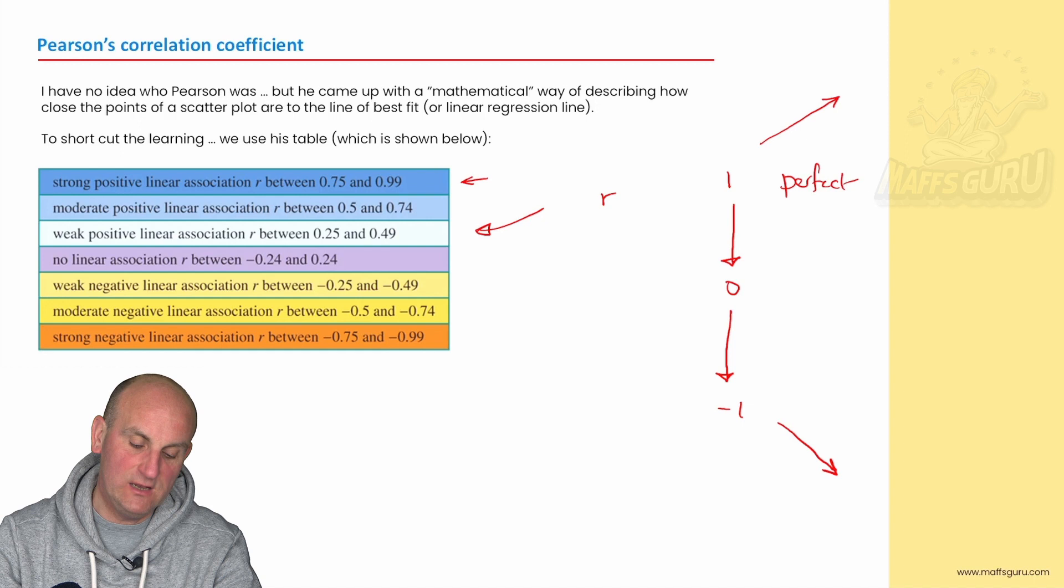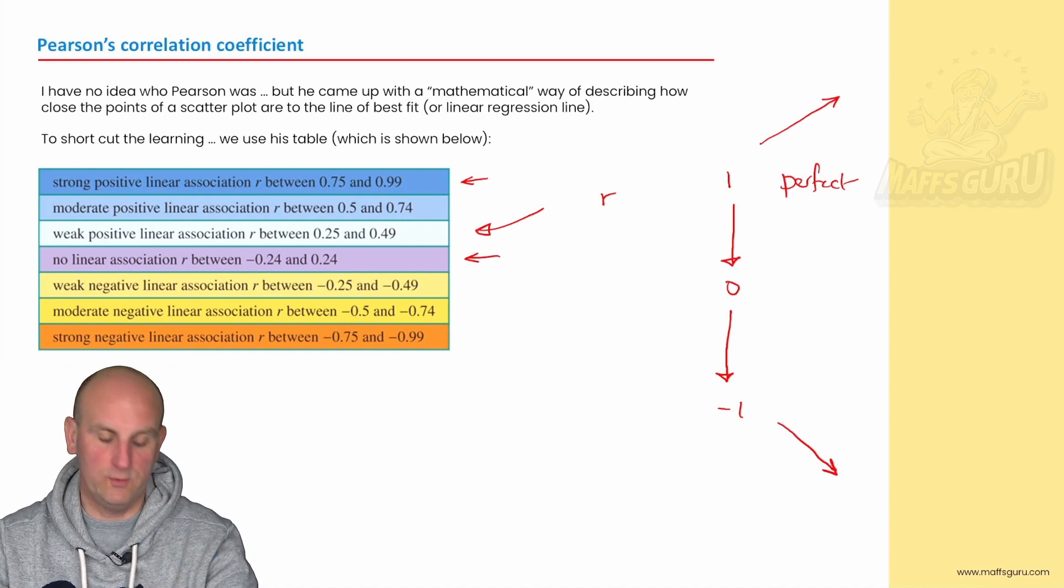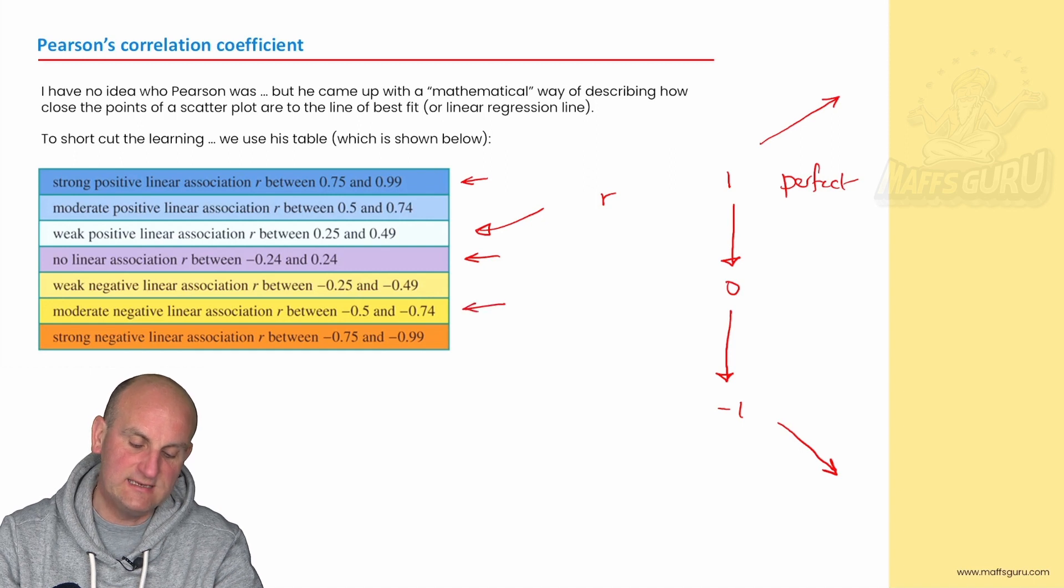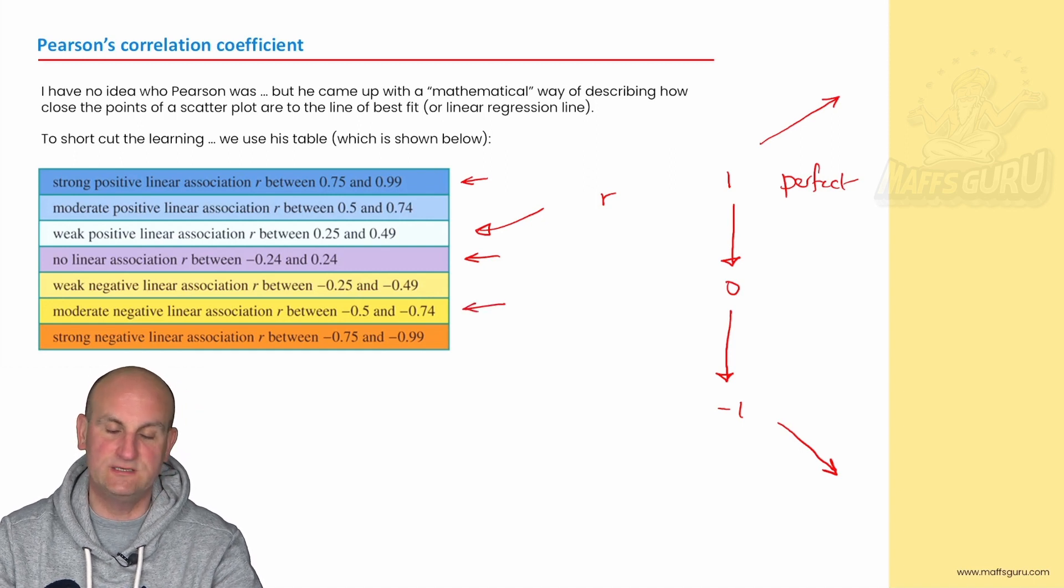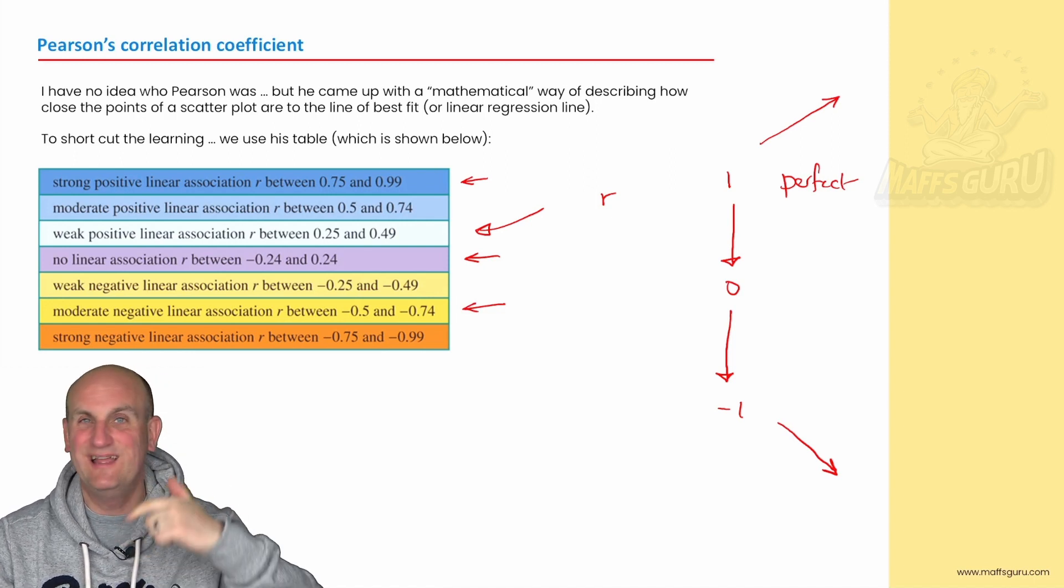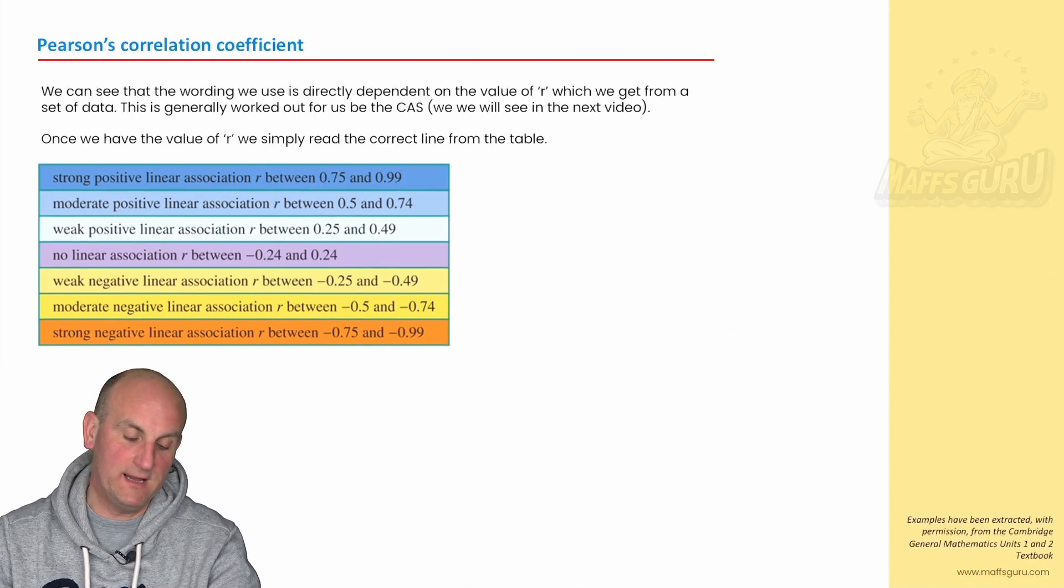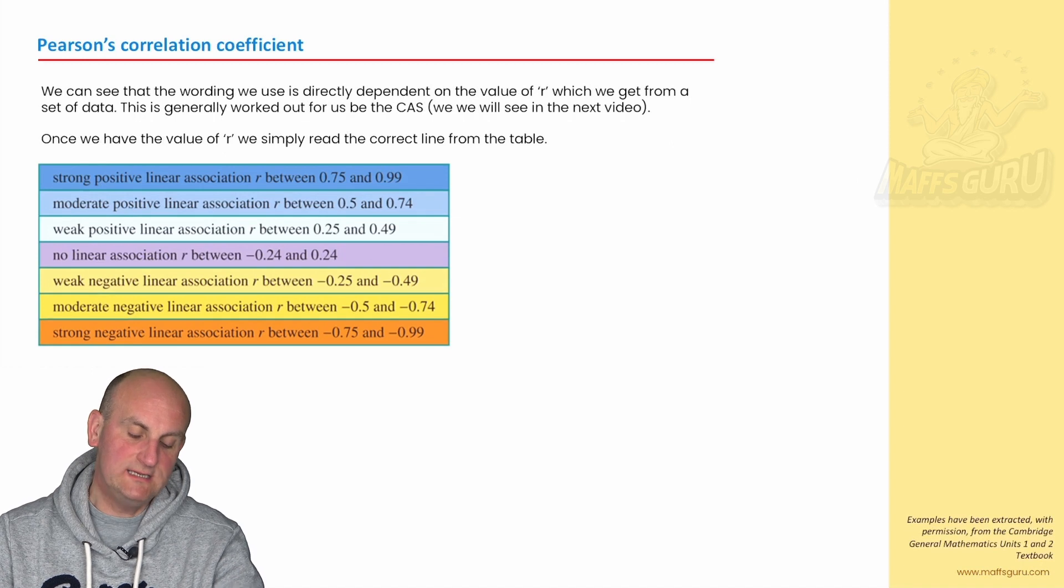He said, if we have a value of R that falls somewhere between 0.24 and minus 0.24, that there is absolutely no association whatsoever. Those points are literally drawn by my three-year-old all over a piece of paper. So these values are what we are looking out for. If we have a negative 0.5 to 0.74 or minus 0.79, then we have a moderate, negative, linear association. In exams, we are asking you to write those words exactly in that order if we give you an R value. We just need to make sure that once we have this R value, we read the table.